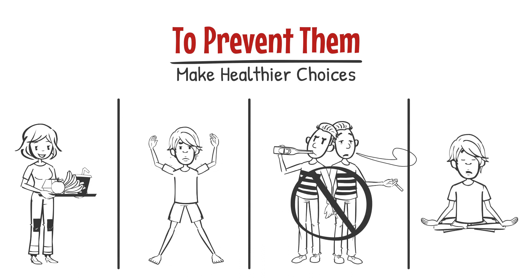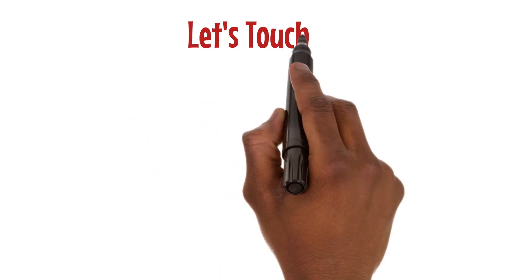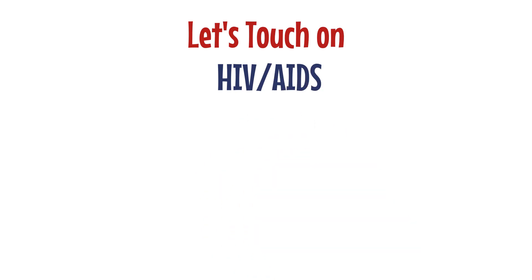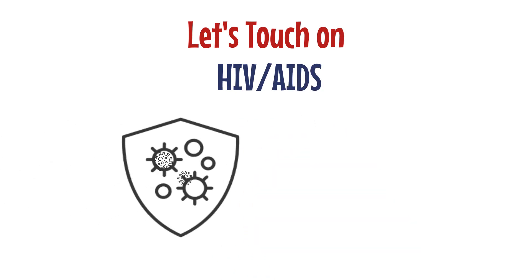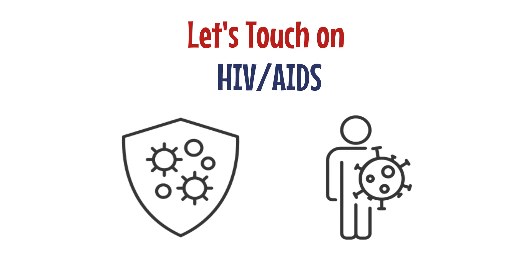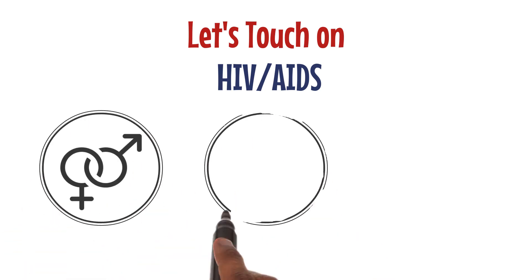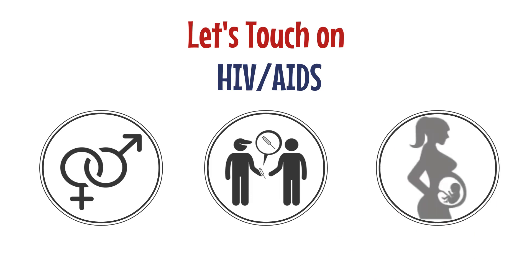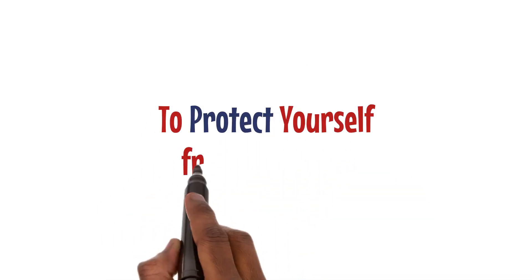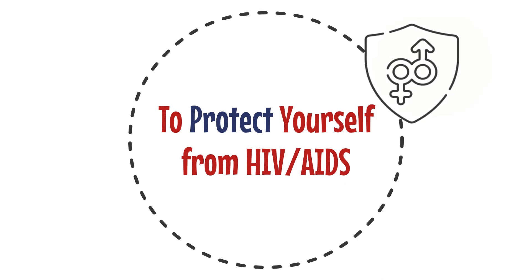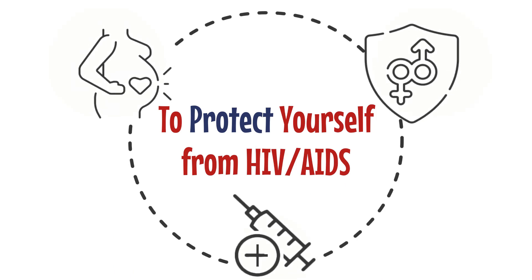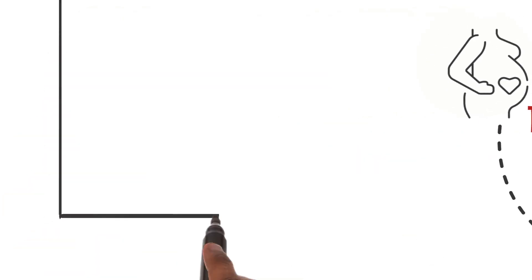HIV/AIDS is a virus that weakens our immune system, making us vulnerable to various infections. It spreads through sexual contact, sharing needles, and from an infected mother to her child. To protect yourself, practice safe sex, use sterile needles, and seek medical advice if you're pregnant and infected.